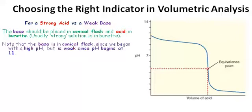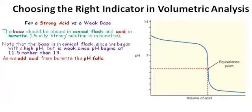Note that the base is in the conical flask since we began with a pH that's high, but it's a weak base because the pH begins at 11.5 rather than 13 or 14. As we add acid from the burette, the pH falls.